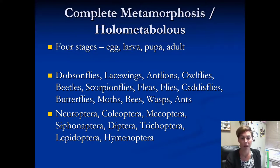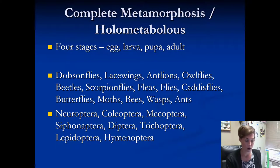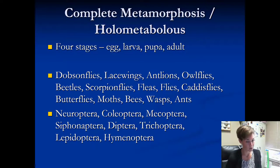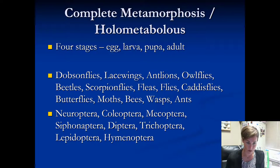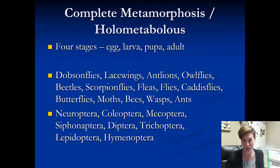Things that have a complete metamorphosis — holometabolous — include the dobsonflies, lacewings, antlions, and owlflies (Neuroptera), all of the beetles (Coleoptera), scorpion flies (Mecoptera), fleas (Siphonaptera), flies (Diptera), caddisflies (Trichoptera), butterflies and moths (Lepidoptera), and bees, wasps, and ants (Hymenoptera).